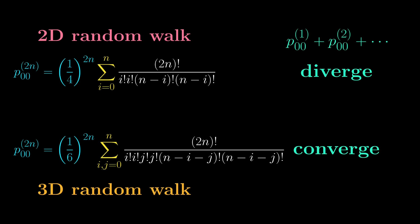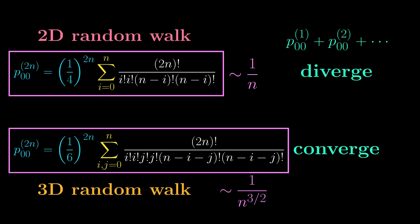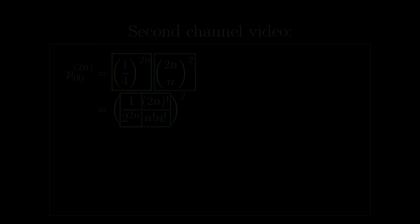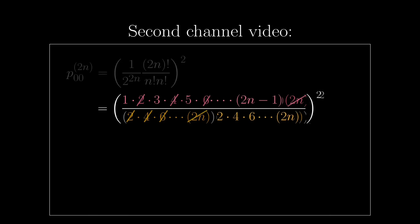The very quick reason for it is that each term here scales like 1 over n, so it diverges because the harmonic series diverges, and the other term would scale like 1 over n to the 3 halves, and this will lead to a convergent series instead. Originally I wanted to make it into the main video, but this is a bit too much manipulation of expressions, and so I ended up making it a second channel video.